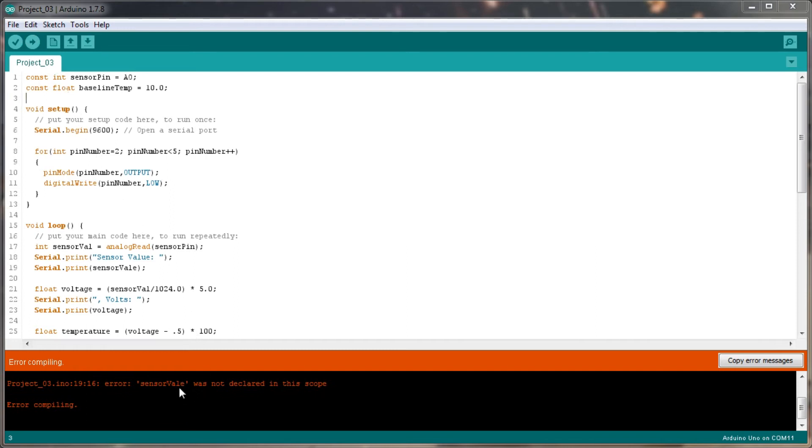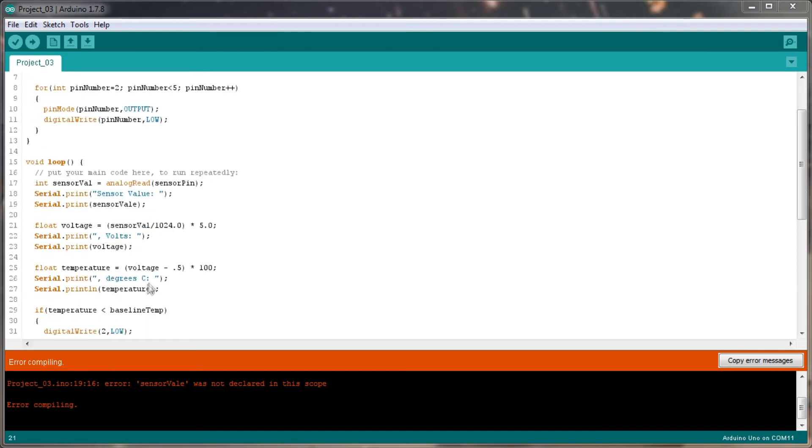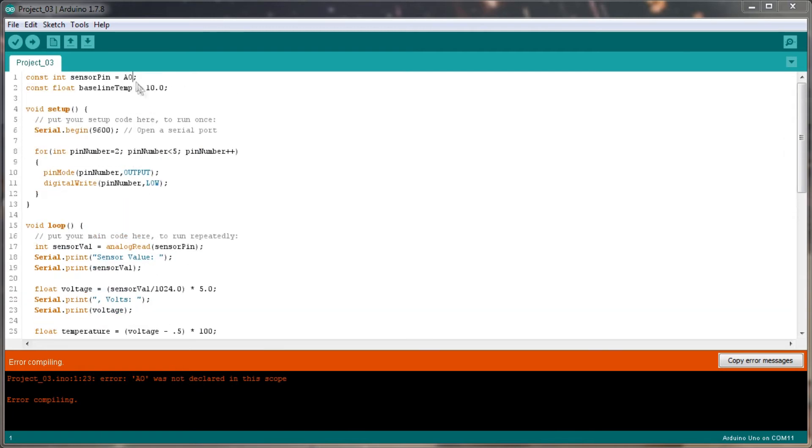Still an error compiling, sense avail, there's another spelling mistake somewhere. So let's change that and upload that. A0 is not declared in the scope. A0 is what it tells me in the book to actually assign for the sensor pin. Maybe that's a 0. Let's try that.